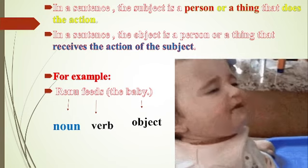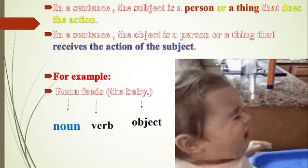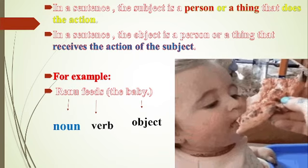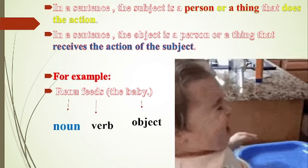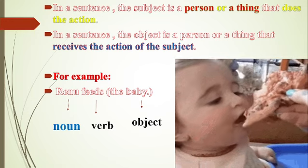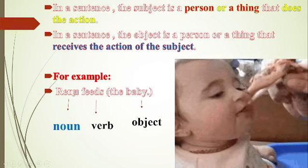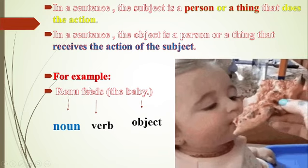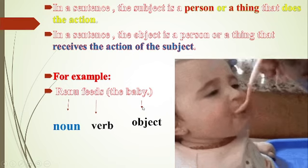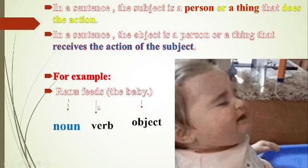In a sentence, the subject is a person or a thing that does the action. They have a name — some names will be there — that is the subject. For example, 'Renu feeds the baby.' Renu is the noun doing the action, so Renu is the subject. Feeds is the verb. Baby is the object — baby receives the action. So baby is the object, Renu is the noun subject, and feeds is the verb.